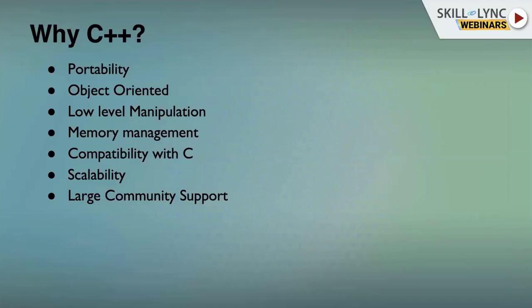Why C++? First, portability. You can write code on any operating system — Windows, Linux, OpenSUSE, Unix-based OS like Mac OS. In whichever OS you write the code, it will be able to execute. The only thing needed is a compiler for that particular OS for compatibility. So it doesn't restrict you to any particular hardware or software — that's the importance of portability.